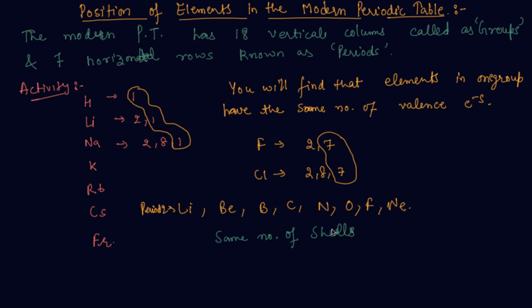That is why they are arranged in a single period. On moving from left to right, atomic number increases: 3, 4, 5, 6, 7, 8, 9, 10.